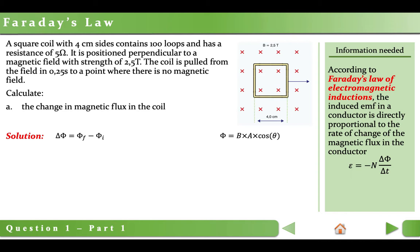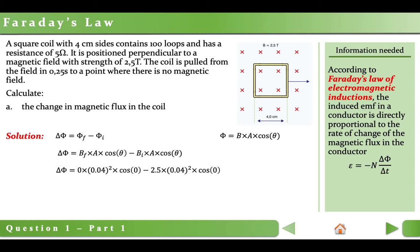Rewriting our equation: delta phi equals B_final times A times cosine theta, minus B_initial times A times cosine theta. In this equation, the angle does not change and the area of the coil does not change — the only values which change are the magnetic field strengths. At the end there is no magnetic field, so B_final equals 0. Substituting: 0 times (0.04)² times cosine 0, minus 2.5 times (0.04)² times cosine 0. The change in magnetic flux equals negative 4 times 10⁻³ Webers.